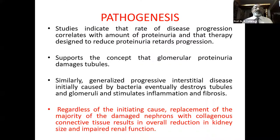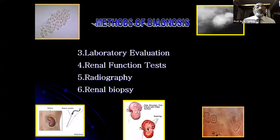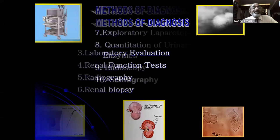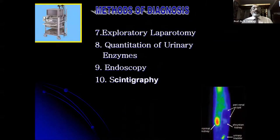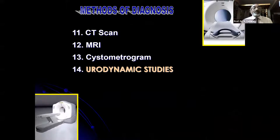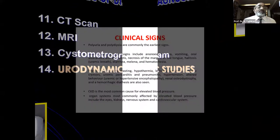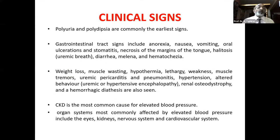Now let us look at the diagnostic techniques: laboratory evaluation of renal function, radiography, renal biopsy, exploratory laparotomy, quantitation of urinary enzymes, endoscopy, scintigraphy, CT scan, MRI, cystometrogram, and urodynamic studies. These are all available to us. The most common clinical signs include polyuria, polydipsia, GI symptoms, anorexia, nausea, vomiting, and stomatitis.